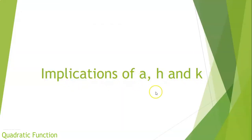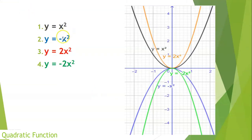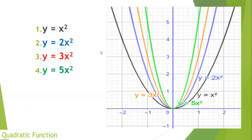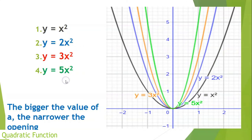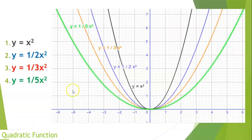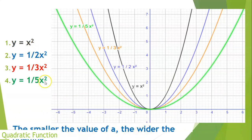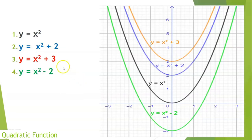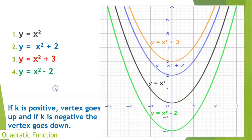Implications of a, h, and k in the vertex form y = a(x − h)² + k. If a is negative, it opens downward; if positive, upward. As the value of a increases, the opening gets narrower; as it decreases (smaller absolute value), the opening gets wider. If k is positive, the graph moves up; if k is negative, it goes down. If h is positive (e.g., +5), the vertex moves 5 units to the left; if h is negative (e.g., −3), the vertex moves 3 units to the right.